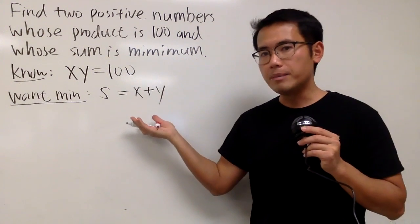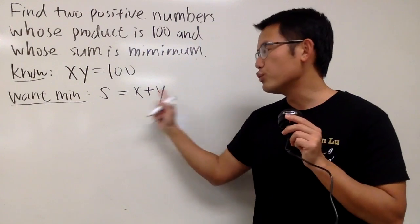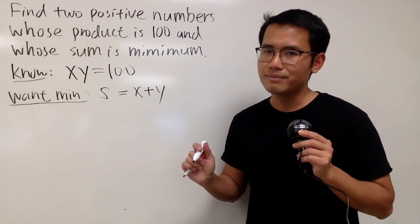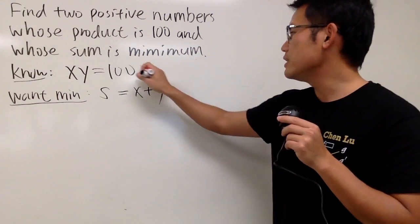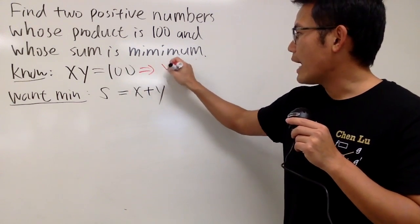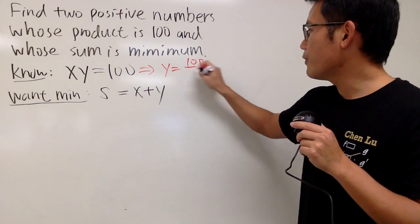And now we just have to find the minimum of this function, but we have two unknowns, two variables. That's no good. Don't worry, though. We can come back here and just divide the x on both sides. So we see this right here. y will be 100 over x.